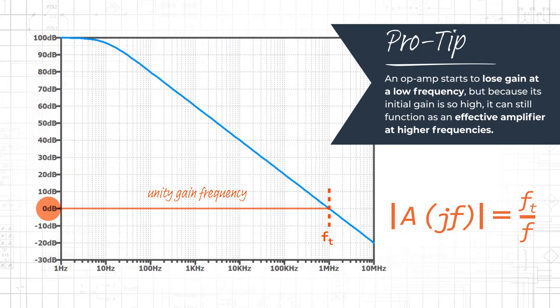An op-amp starts to lose gain at a low frequency, but because its initial gain is so high, it can still function as an effective amplifier at higher frequencies. In fact, by using the op-amp in a negative feedback configuration, we can trade gain for bandwidth.